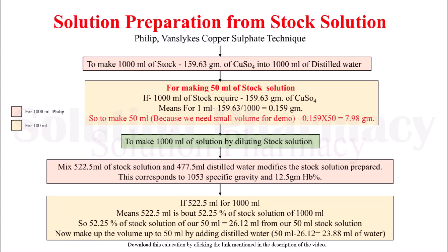For the preparation of 1000 ml stock solution, 159.63 gram of copper sulfate is dissolved in 1000 ml of distilled water. Here we have calculated for 50 ml, so we used 7.98 gram dissolved in 50 ml distilled water. To prepare the test solution from the stock, mix 522.5 ml of stock solution with 477.5 ml of distilled water to get 1000 ml of test solution.